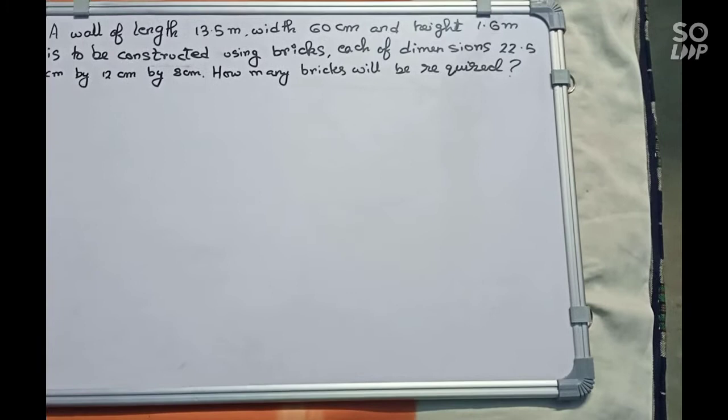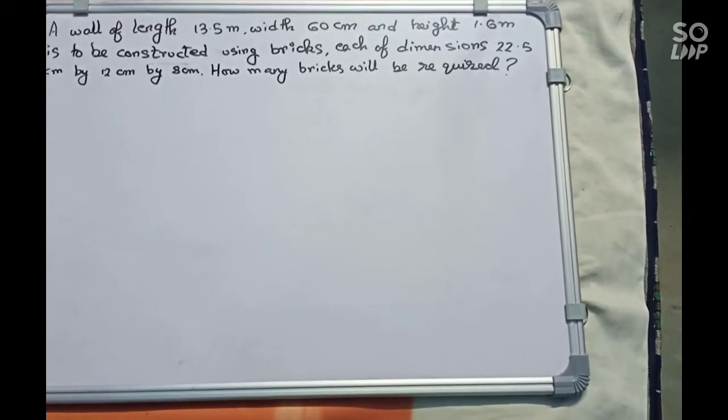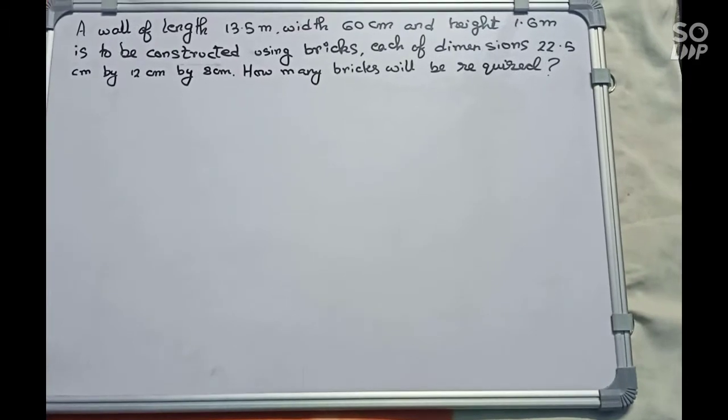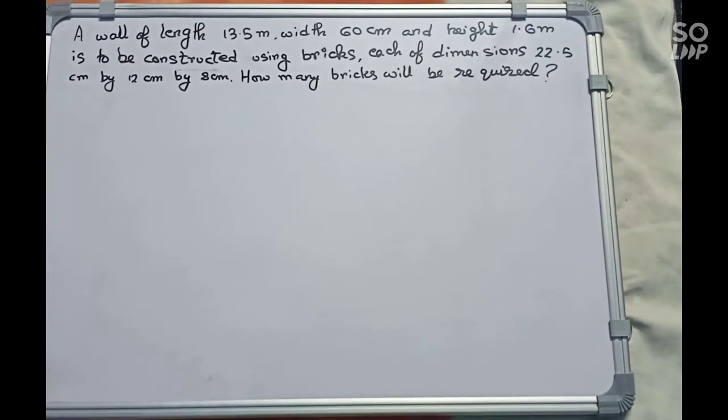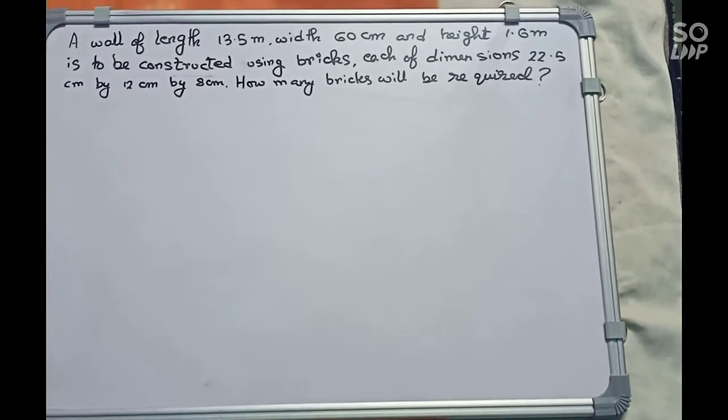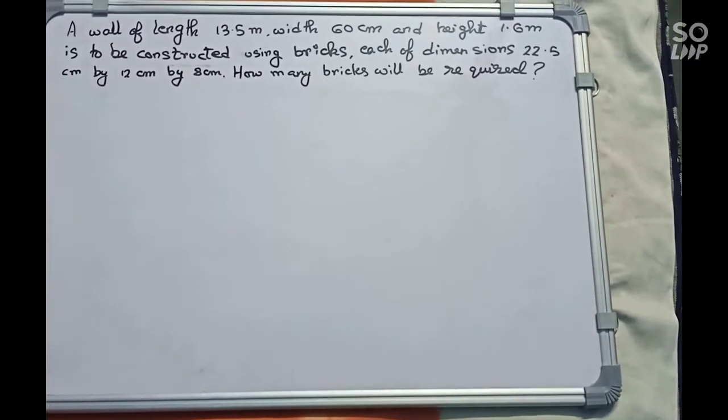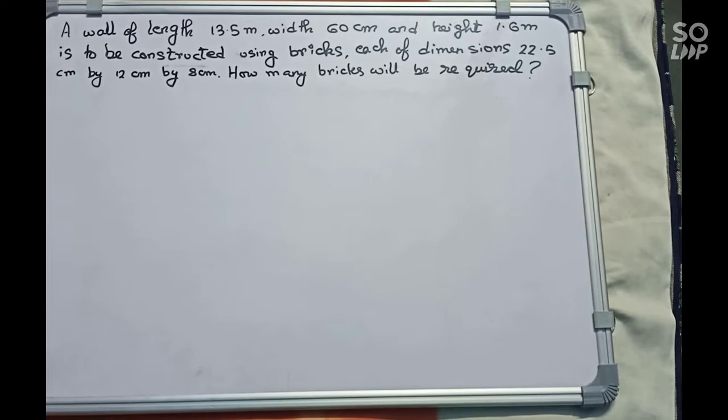Hello guys, welcome to this video. In this video, our question is: a wall of length 13.5 meters, width 60 centimeters, and height 1.6 meters is to be constructed using bricks, each of dimensions 22.5 cm by 12 cm by 8 cm.